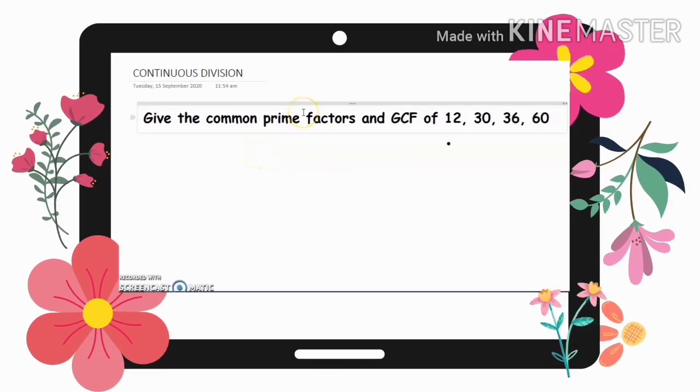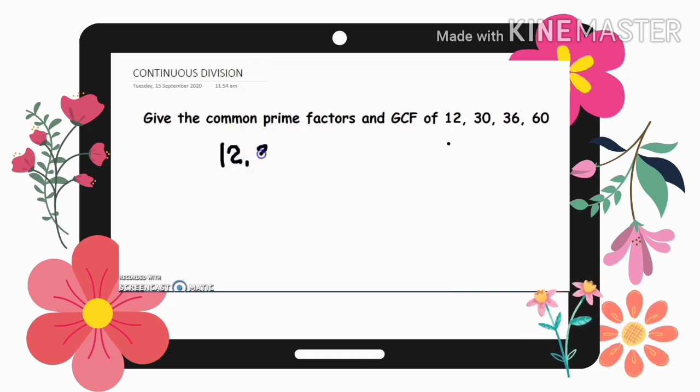So, for the last example, give the common prime factors and GCF of these 4 numbers. So, we have 12, 30, 36, and 60. So, first step, let's write the numbers 12, 30, 36, and 60. So, 4 na sila. Then, ito tayo ng division symbol. Inverted division symbol. Then, think of a prime number na divisible ang 12, 30, 36, and 60. So, they are all-even numbers. So, they are divisible by 2.